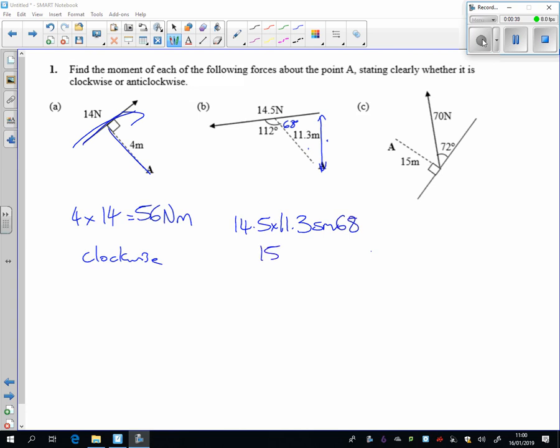Tapping that in the calculator gives me 152 newton metres, and this time we're going this way round, so this is anti-clockwise.